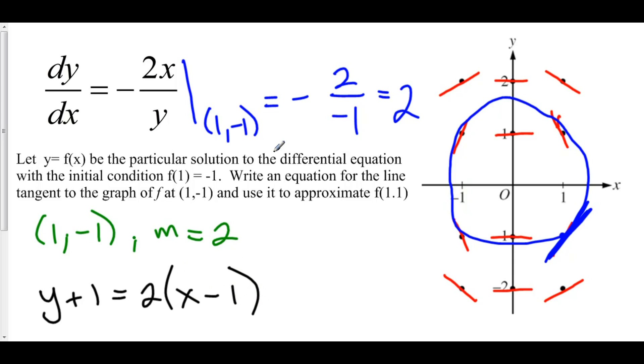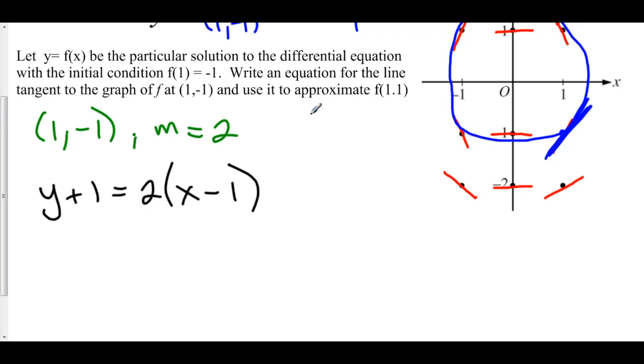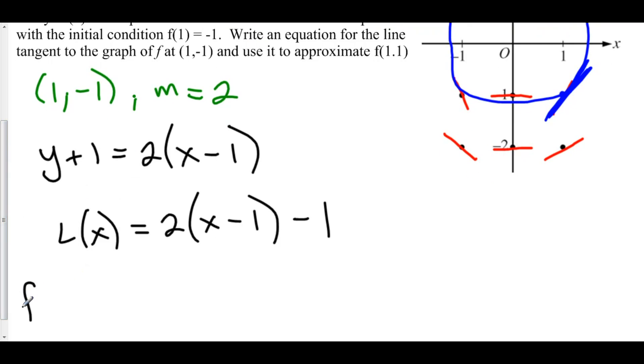Now for the second part: use this tangent line to approximate f of 1.1. This is using our linearization. They want us to use this linearization centered at x equals 1 to approximate f of 1.1. We have L of x, because we're going to change y to be our linearization, is equal to 2 times (x minus 1). We'll move this plus 1 over. That means that f of 1.1 is approximated by L of 1.1, which is equal to 2 times (1.1 minus 1) minus 1. 1.1 minus 1 is 0.1 times 2 is 0.2 minus 1 is negative 0.8. Here we have approximated f of 1.1 by using a linearization centered at x equals 1 that we obtained just by looking at our slope field.